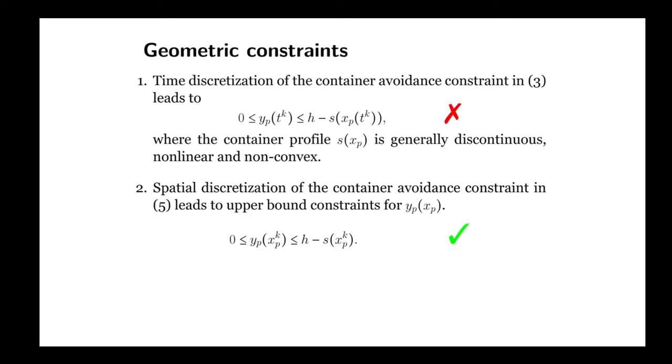Now, comparing the container avoidance constraints in the original formulation with the new formulation after the trick, we have that in the original formulation, after time discretization, the minimum height for the payload in a certain time instant depended on a function representing the container profile. And this function was generally discontinuous, nonlinear, and non-convex.